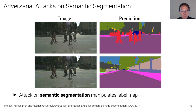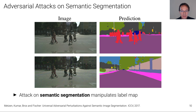This spawned an entire research field on adversarial attacks. For instance, it has been demonstrated that in the case of self-driving, adversarial attacks can be effective on semantic segmentation. Here's an input image and the result of a state-of-the-art semantic segmentation algorithm, and you can see that if you change the pixels only slightly you can produce an arbitrary label map, which has severe implications for safety in self-driving.